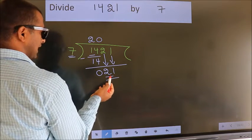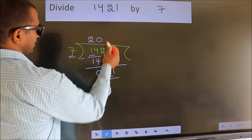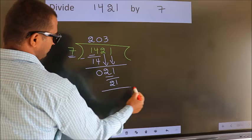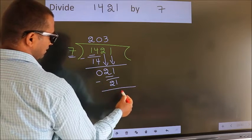When do we get 21? In 7 table. 7 threes, 21. Now we subtract. We get 0.